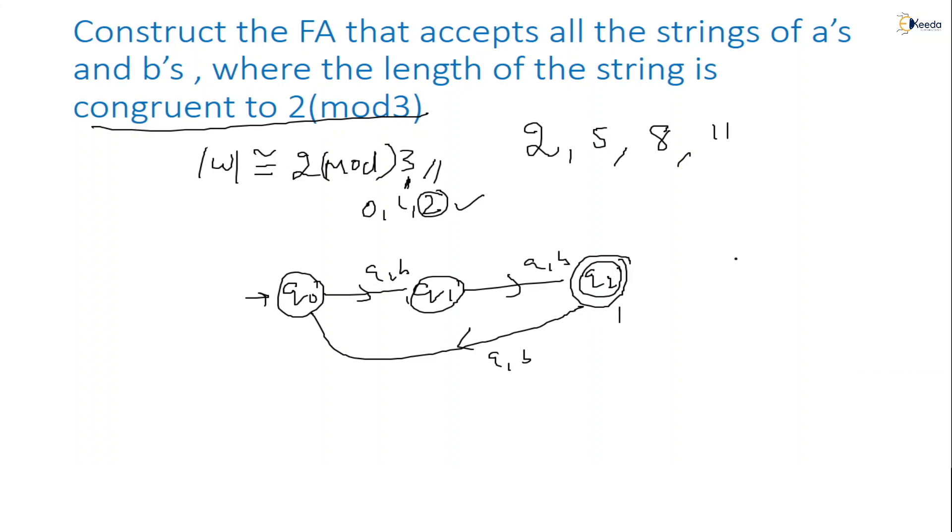Number of states how many? 3 only. Yes, we are getting now number of states in minimal FA equal to 3. By looking at this only, 2 modulo 3, 3 states only we will get. So 2 is what? Final state.